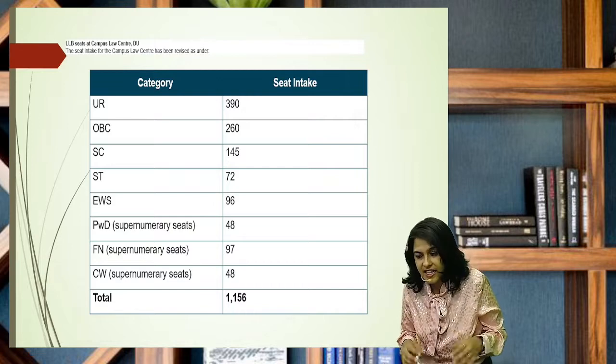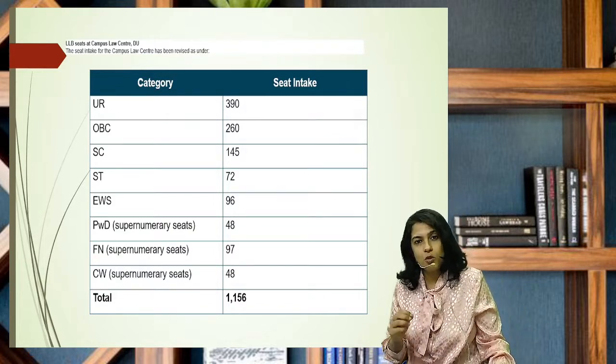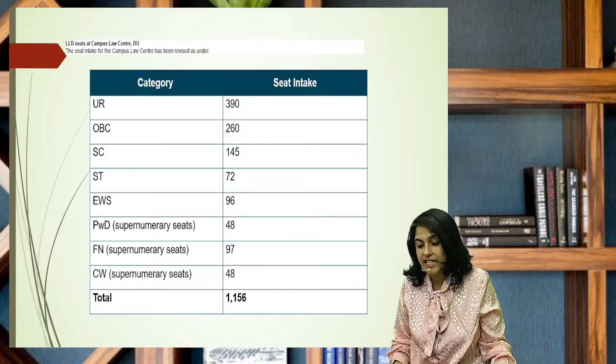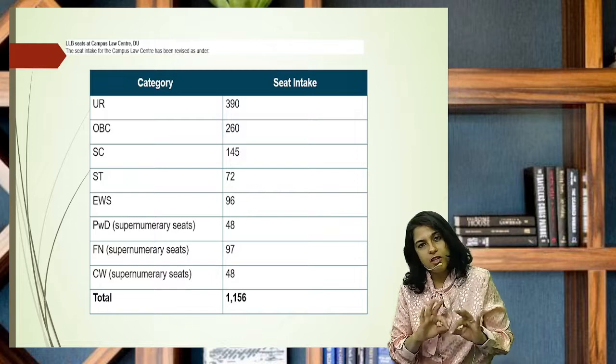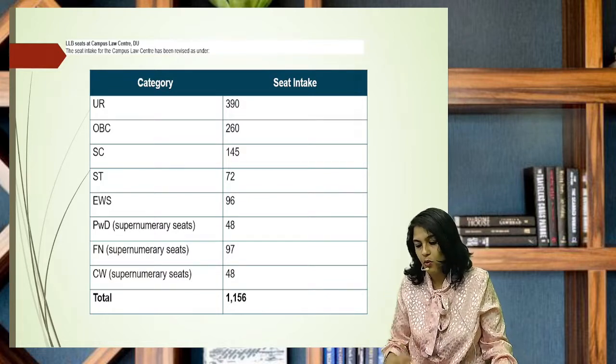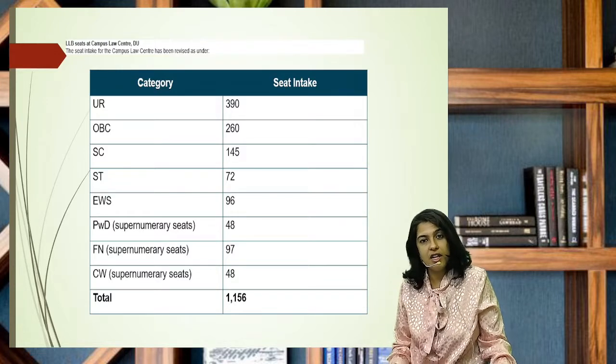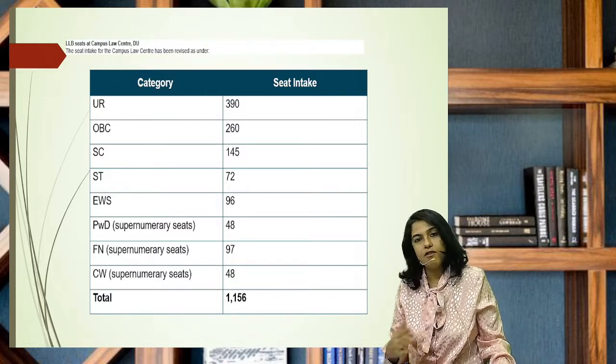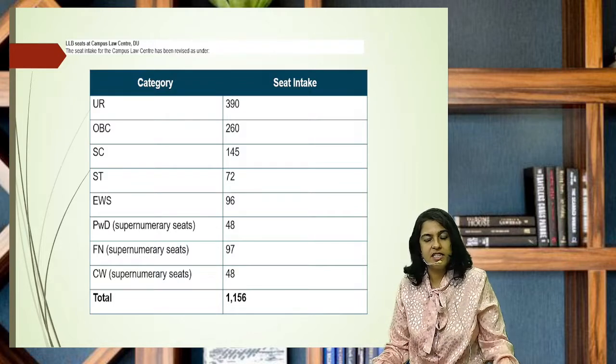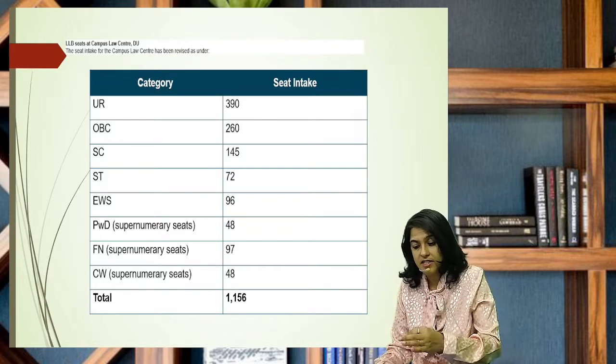Now, how many seats are there? You can see the table here. UR is the unreserved category and the rest are reserved categories. Unreserved category has 390 seats, then you have OBC 260, SC, ST - all these categories are there. So total 1156 seats.